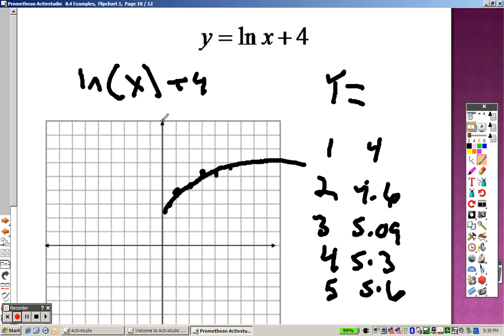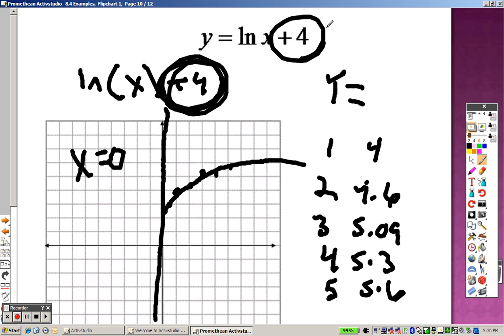But once again, the horizontal asymptote here is right there at x equals 0. So before, this number signified, right here, the asymptote. But it does not in logs. It's not where the asymptote is. So keep that in mind when you're doing these.